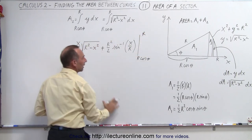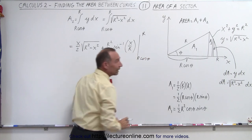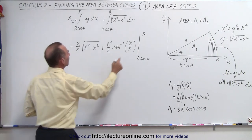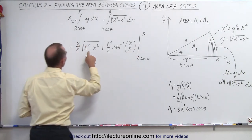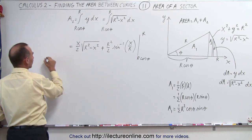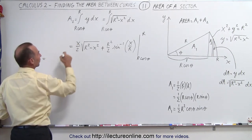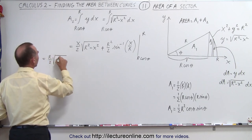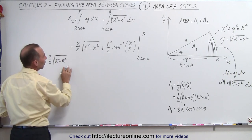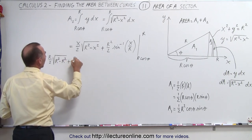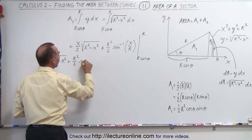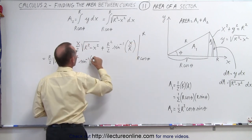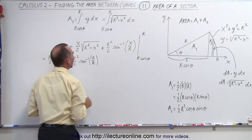Once we've evaluated this, we then add A1 to it, and that will give the complete area of the sector. Let's plug in the upper limit. When we plug in x equals r, we get r divided by 2 times the square root of r² minus r², so that term goes to 0, plus r² over 2 times the inverse sine of r over r, which is the inverse sine of 1.